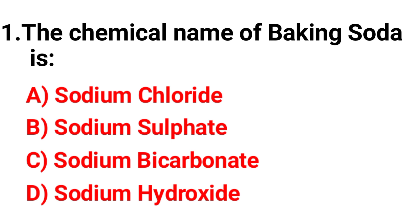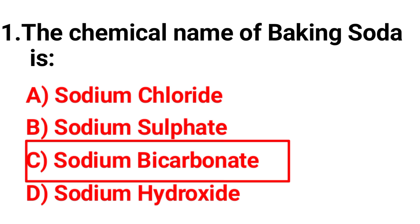Question one: The chemical name of baking soda is — option A: sodium chloride, option B: sodium sulfate, option C: sodium bicarbonate, option D: sodium hydroxide. Your correct option is option C, sodium bicarbonate.